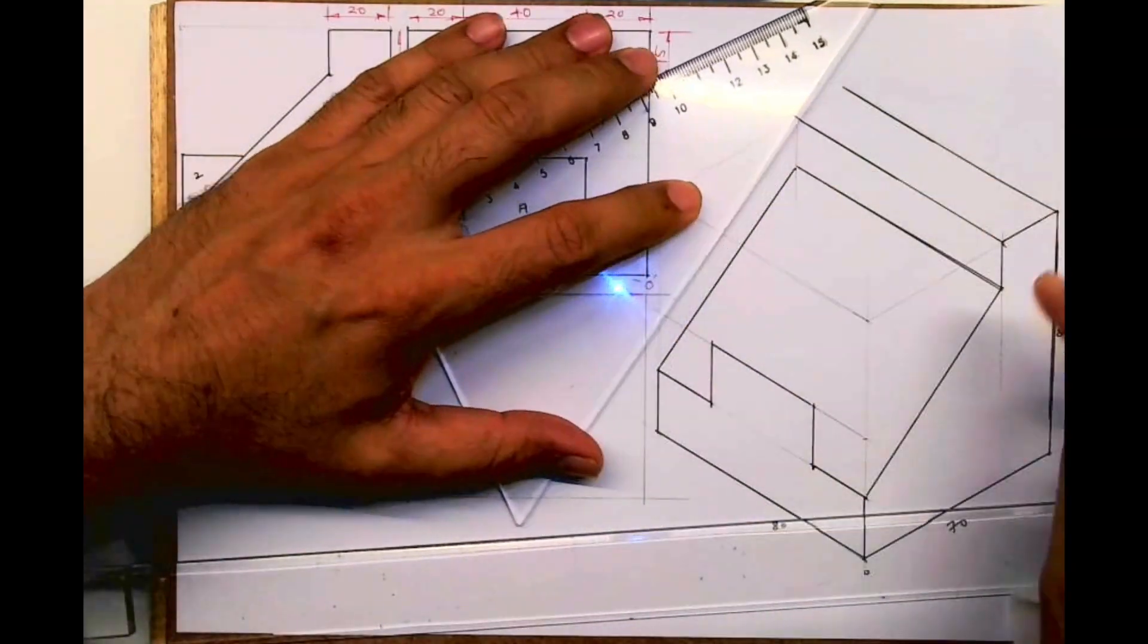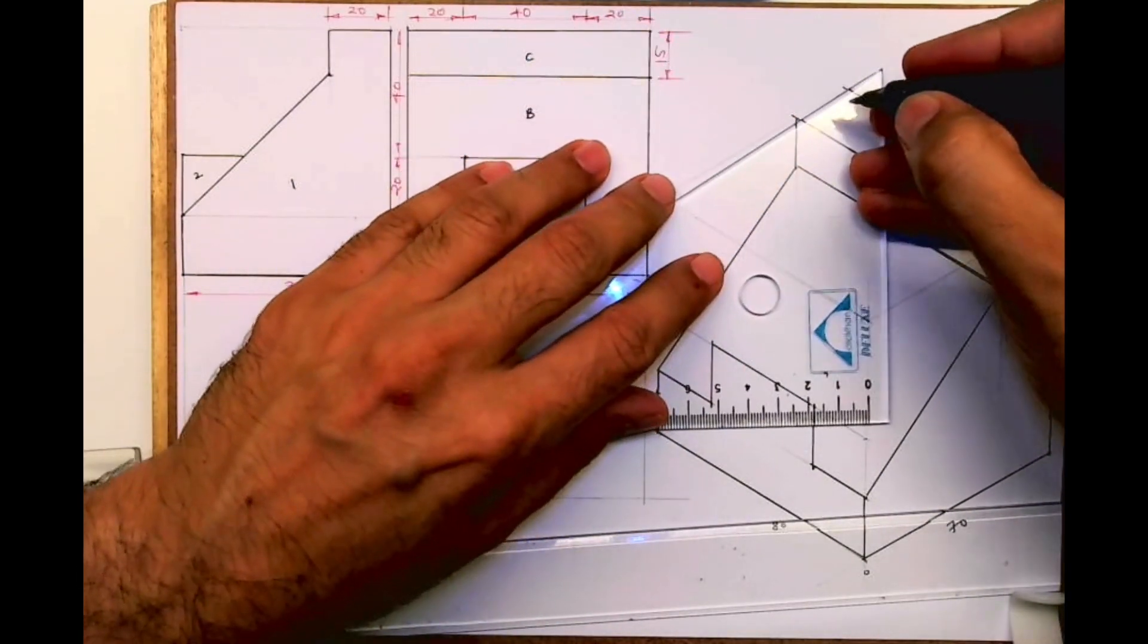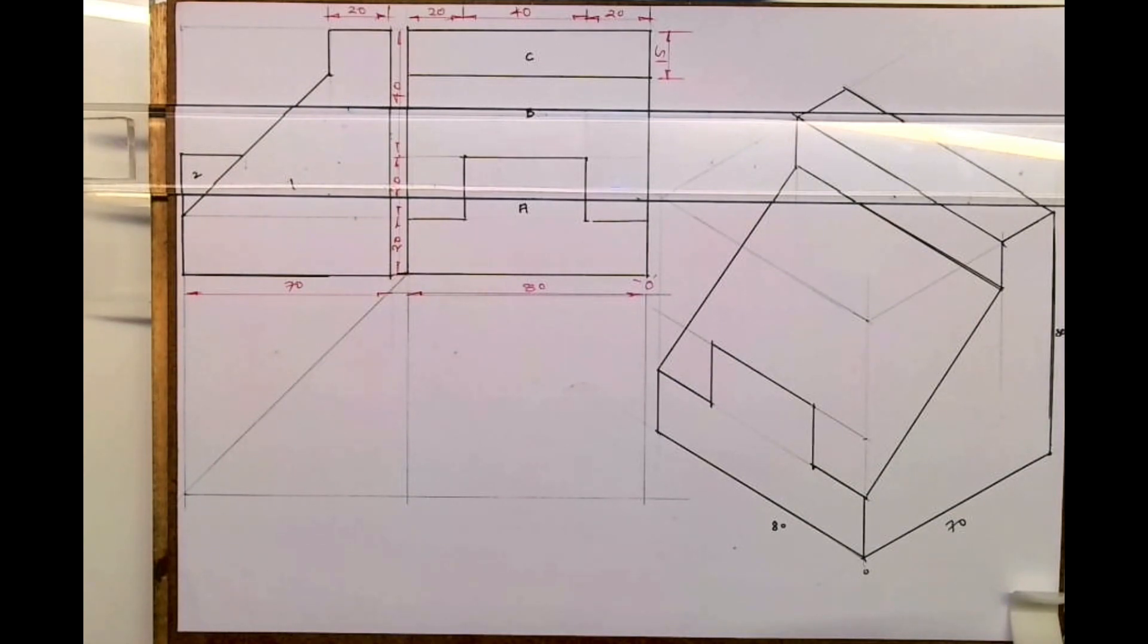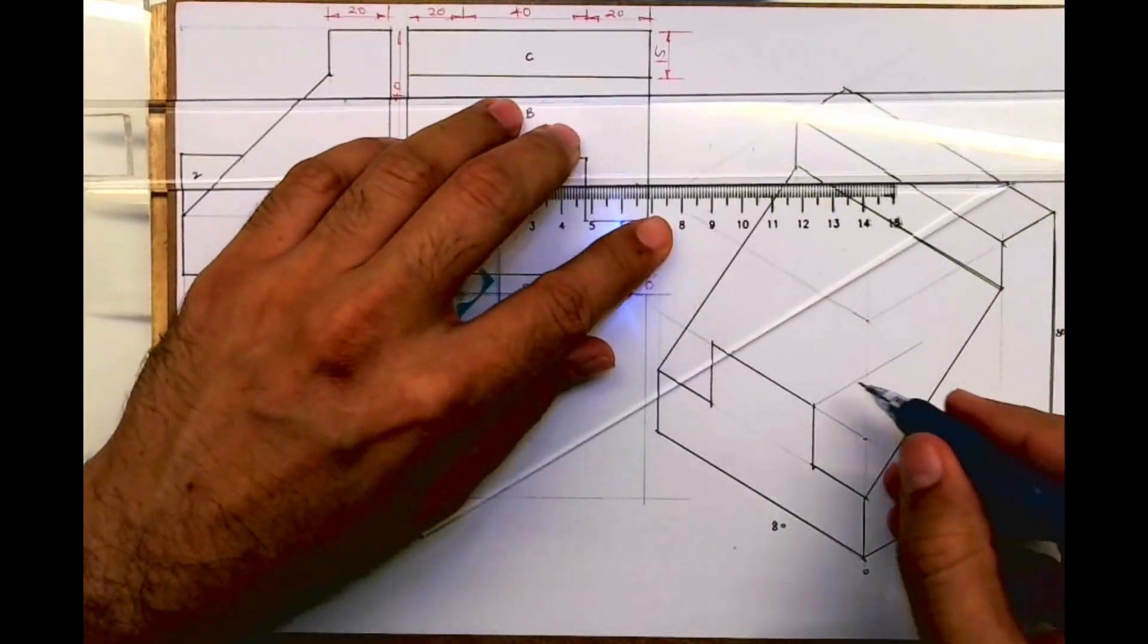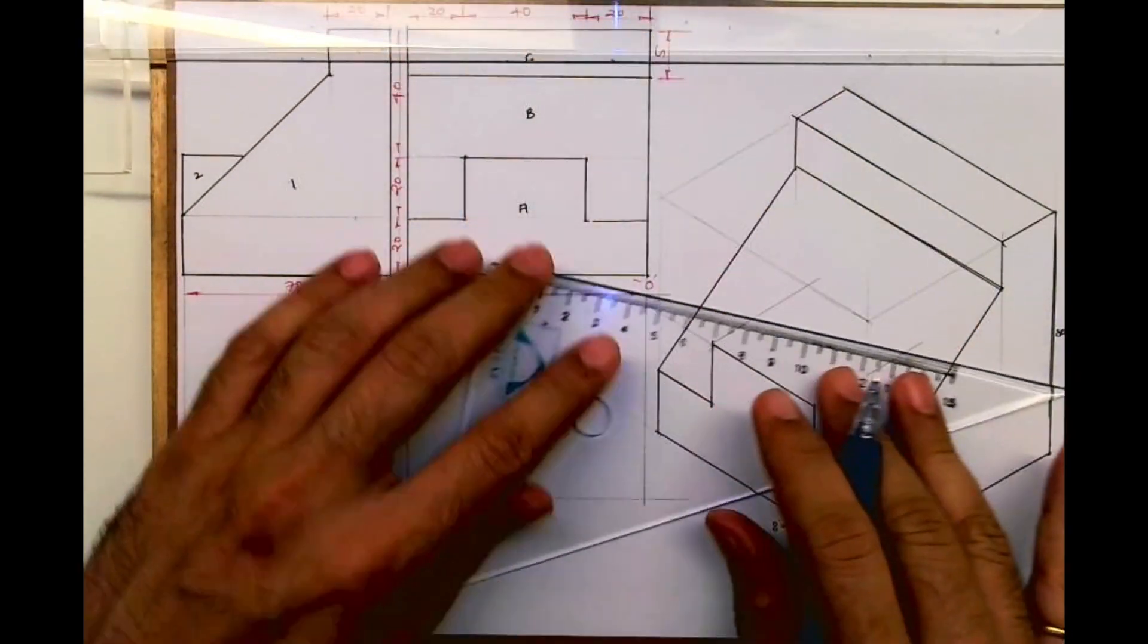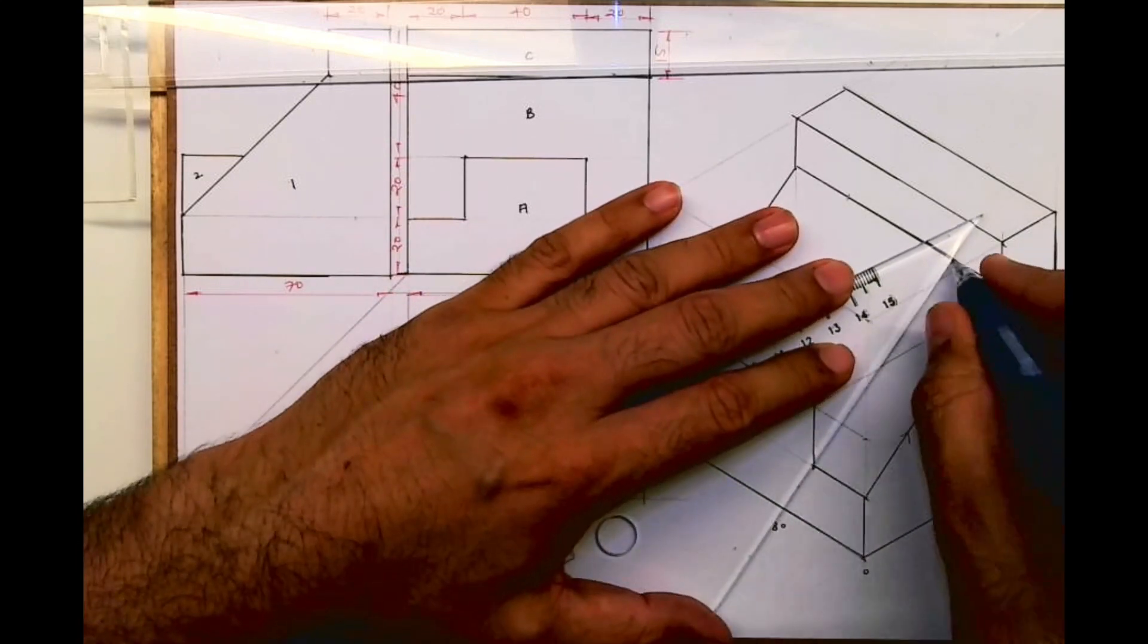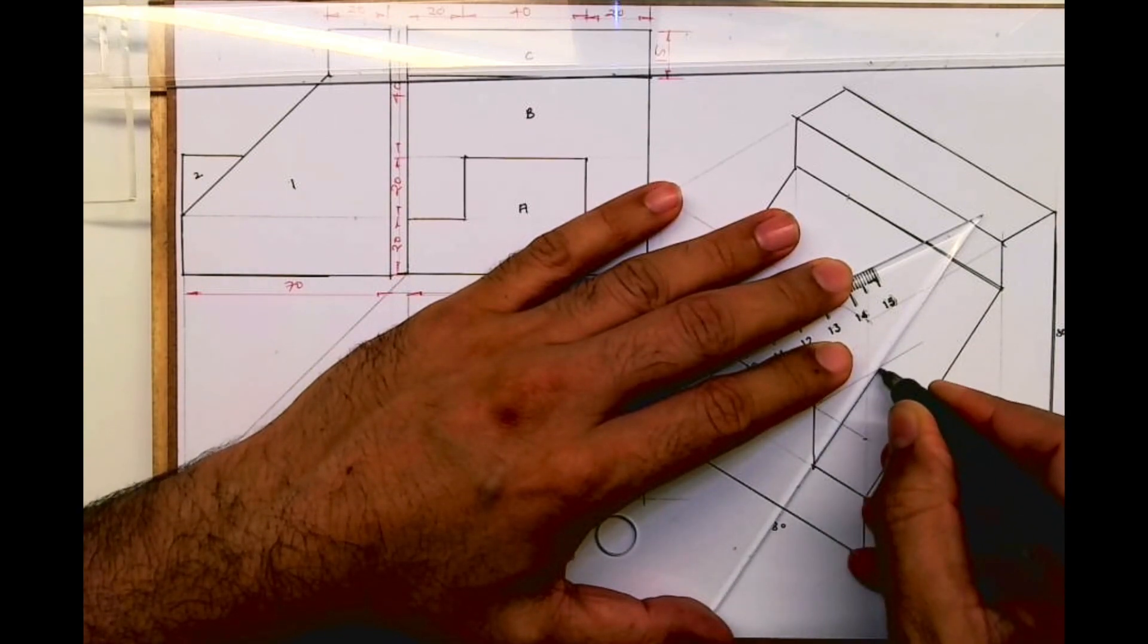Then join this behind portion. Whatever is there in the front, the same thing is behind. With that concept we can complete this. Now we draw a line from here but we don't know till what distance we need to extend, so we need to draw parallel to this slope. If you see this is 20, 20, 20, so you join this. This is what you will get.